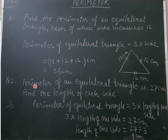Solve next question. Perimeter of equilateral triangle is 27 cm. Find the length of each side.